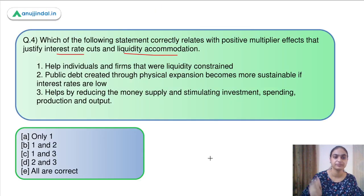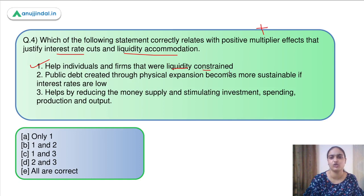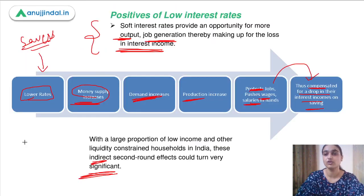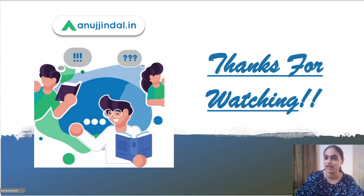Returning to the question — we identify correct statements showing positive effects of low interest rates. Statement one is correct: it helps liquidity-constrained individuals and firms. Statement two is correct: public debt created through fiscal expansion becomes more sustainable. Statement three is incorrect: low interest rates increase money supply, not reduce it. So first and second are correct — the answer is option B. This was all for today's session. I hope you found it useful. Thank you so much.